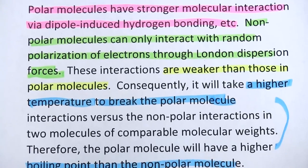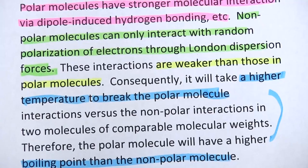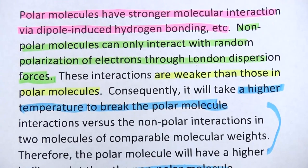And here's the actual text of the answer the student accompanied those drawings with. Let's see if we can read it along together. Polar molecules have stronger molecular interaction via dipole-induced hydrogen bonding, etc. Non-polar molecules can only interact with random polarization of electrons through London dispersion forces. These interactions are weaker than those in polar molecules. Consequently, it will take a higher temperature to break the polar molecule interactions versus the non-polar interactions in two molecules of comparable molecular weights. Therefore, the polar molecule will have a higher boiling point than the non-polar molecule.